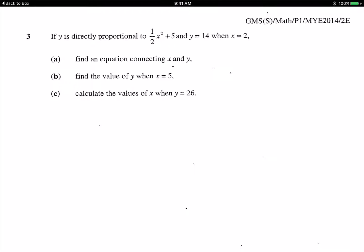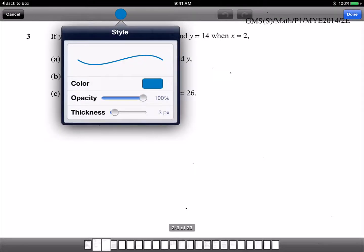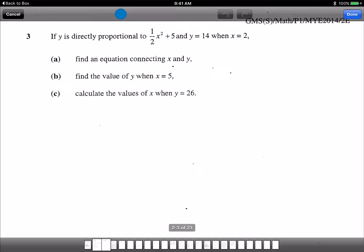So find an equation connecting x and y. First step. Now this is directly proportional. So for 3a, y equals to k times 1/2 x squared plus 5. And then we need to substitute y equals to 14, x equals to 2, because we want to find k. Step 1 is trying to find k.